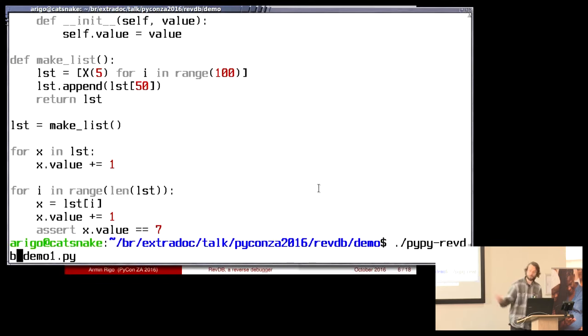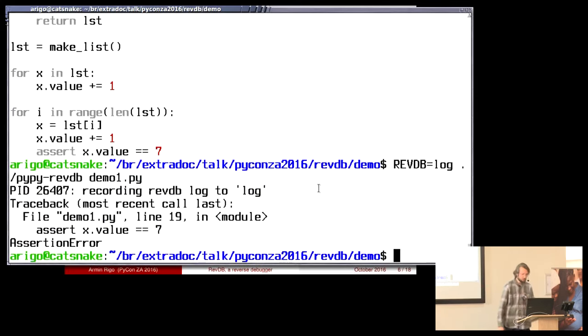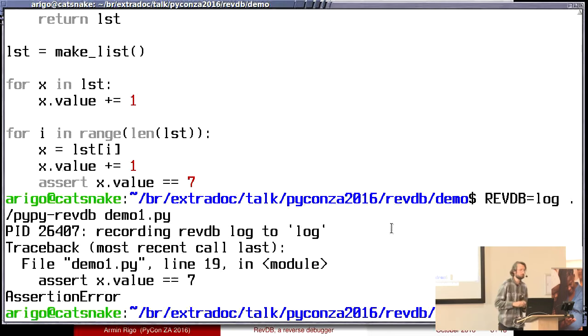So now, I start pypy.revdb, which is just a special version of pypy, which works mostly like CPython. And I ask it to produce a file called log. It runs, and then it ends up with the failing assert. In larger and more realistic examples, typically, you would run a program for one or two minutes, and then maybe your bug is rare and does not usually show up, but shows up only one time every 100 executions or something.